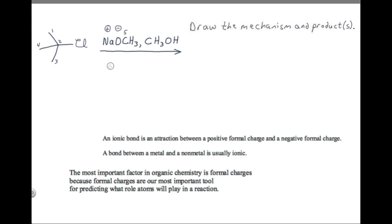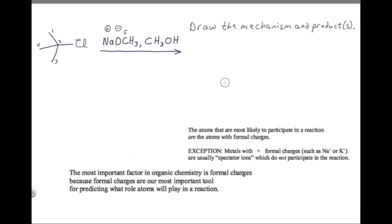I went into more detail about how to discover and use ionic bonds in the SN2 series. This is very important material because we use the ionic bond to find the formal charges, and the formal charges are the most important factor in organic chemistry. Now we should start predicting the roles that we expect various atoms to play in the reaction. The atoms most likely to participate are the atoms with formal charges.